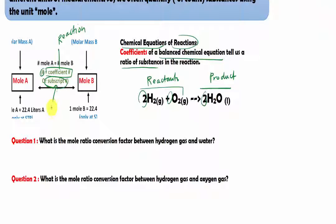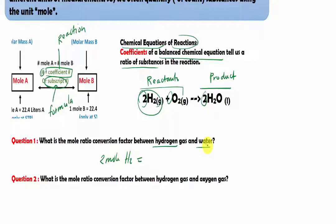Because we can quantify substances in moles using coefficients, we can write conversion factors. For the question — what is the mole ratio conversion factor between hydrogen gas and water? Hydrogen has a coefficient of 2, so two moles of hydrogen gas, and water also has a coefficient of 2, so two moles of H₂O. We can simplify this ratio to one to one, though both answers are correct.